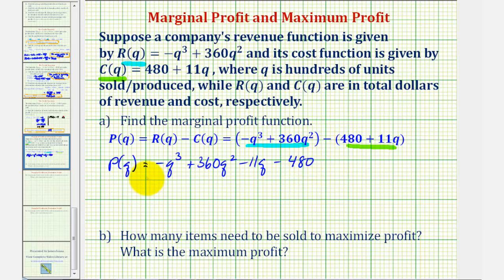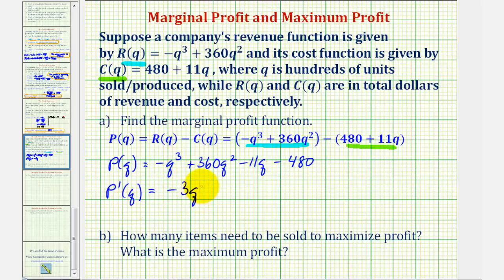Now that we have the profit function, we can find the marginal profit function, which is the derivative of the profit function, or p prime of q. The derivative with respect to q is negative 3q squared plus 720q minus 11.